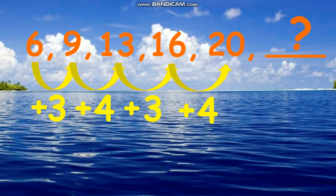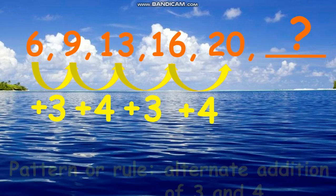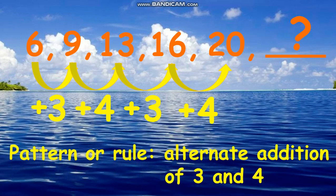The pattern or rule for this series of numbers is alternate addition of 3 and 4. It means 20 plus 3 equals 23. The missing number is 23.